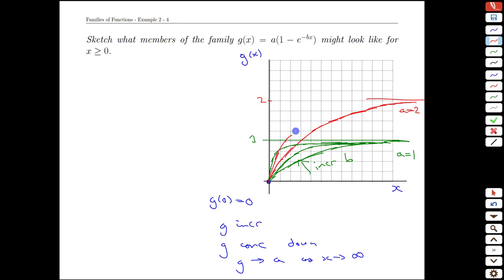And so right away, we can get a number of different family members that, again, all share the same property of this increasing concave downness, having an asymptote. The asymptote is dictated by the value of a for the family member.